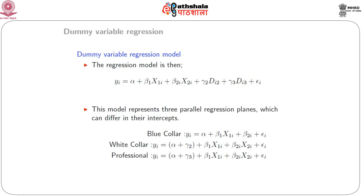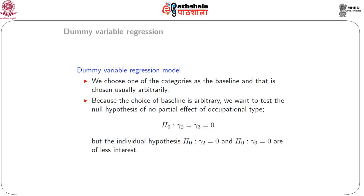Blue collar serves as the baseline category, coded 0 for both dummy variables. The plot shows three parallel planes and the distance between them, which equals the difference in intercepts. The choice of baseline category is arbitrary — we would fit the same three regression planes regardless of which category is selected as baseline, all parallel to each other and differing only in intercept values.